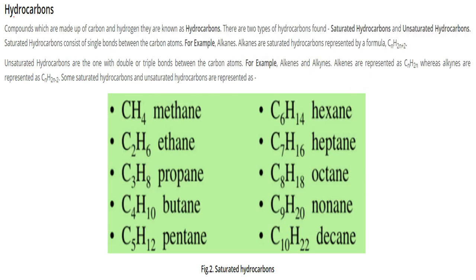Hydrocarbons, as the name suggests, are compounds made up of carbon and hydrogen. There are two types of hydrocarbons: saturated hydrocarbons and unsaturated hydrocarbons.